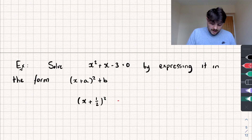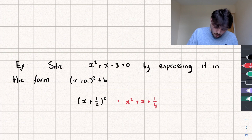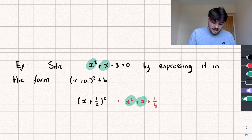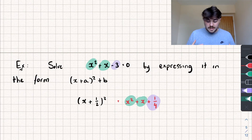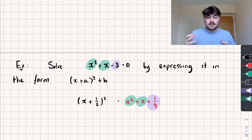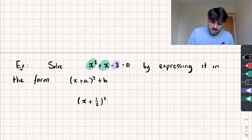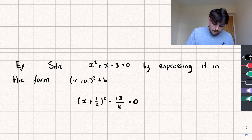Expanding x plus one half, all squared, gives x squared plus x plus one quarter. The first two terms match what we want, but the constant is wrong — we want minus 3, but at the minute it's plus one quarter. To fix this, we subtract 3.25, which as a fraction is 13 over 4. Subtracting 13 over 4 means we've expressed the quadratic equation in completed square form: x plus one half, all squared, minus 13 over 4.